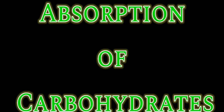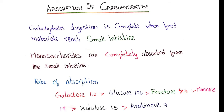Hello everyone. This video is about absorption of carbohydrates. Digestion of carbohydrates completes when food material reaches the small intestine. During this digestion, the complex carbohydrates like polysaccharides and oligosaccharides are converted into simpler forms, that is monosaccharides, because only monosaccharides are completely absorbed from the small intestine.